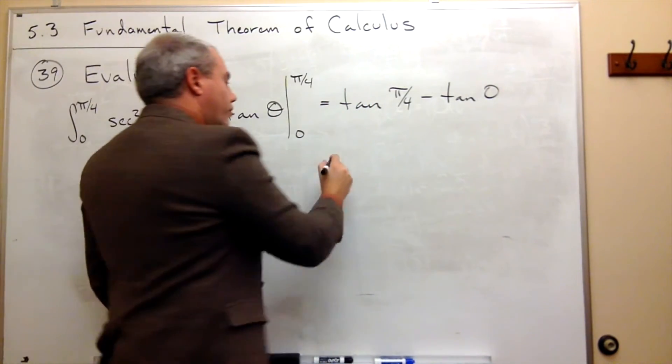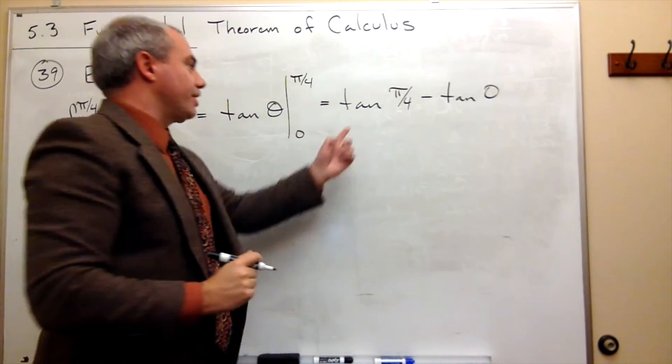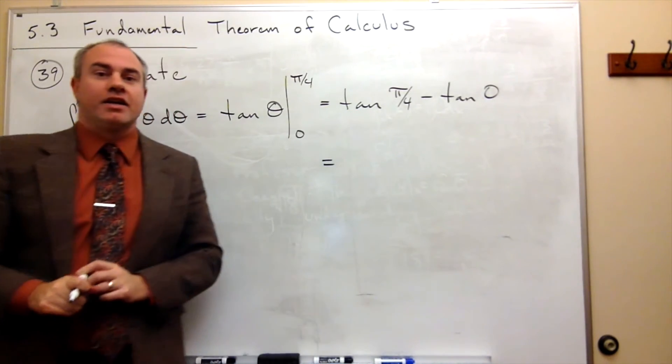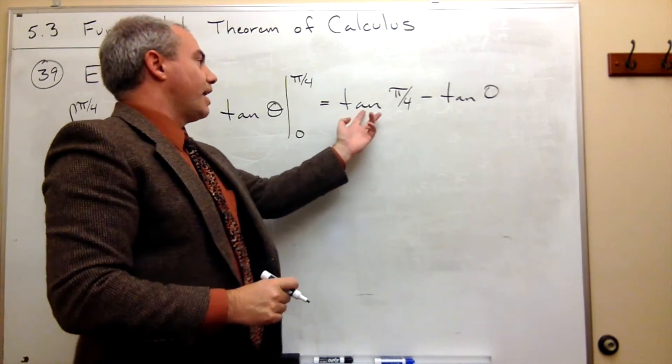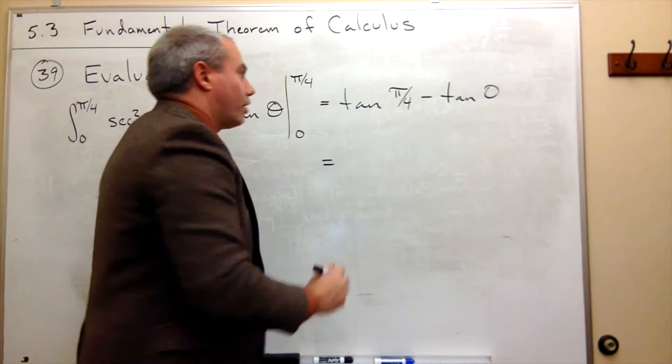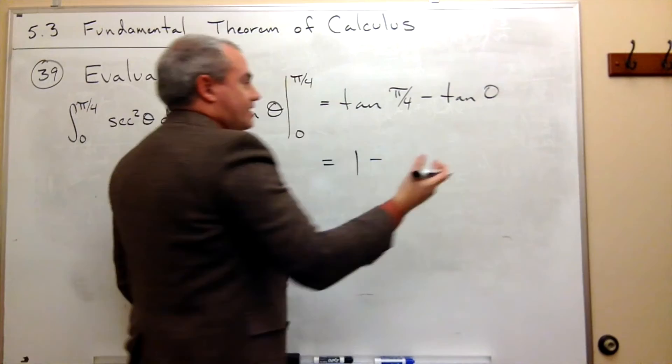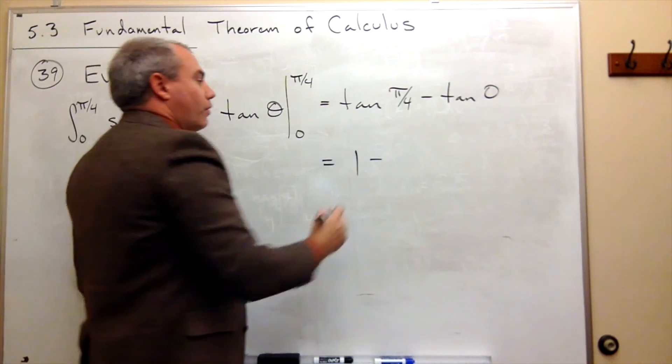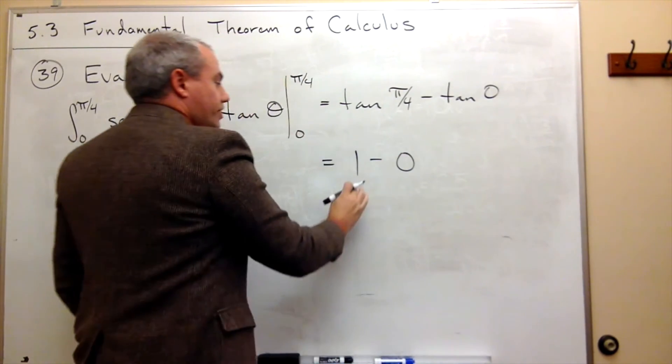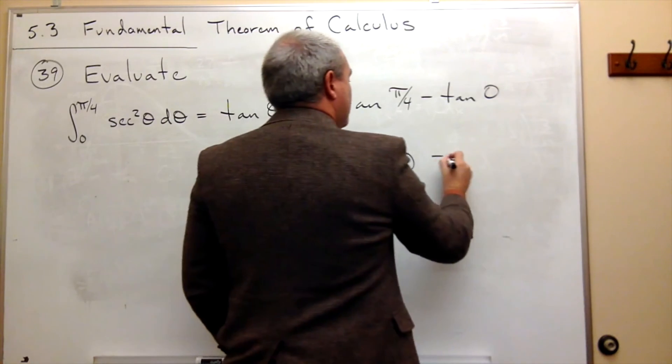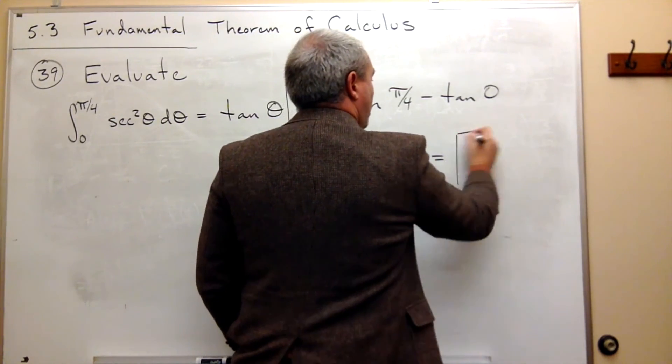Okay, remember that tangent is just sine over cosine if that's helpful. And tangent of π over 4, that's 1. Tangent of 0, that's sine of 0 over cosine of 0 or 0. So we just get 1 minus 0, which gives me 1.